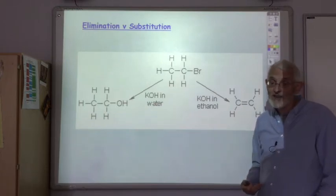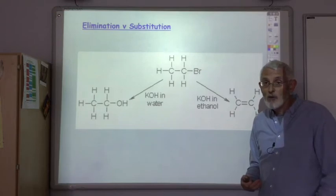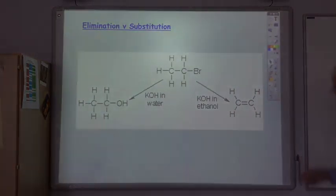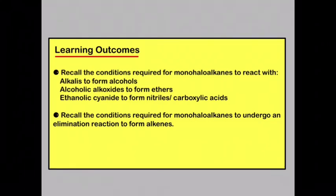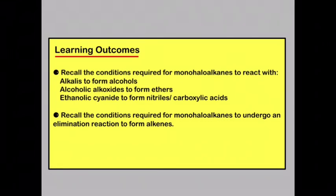So that's the reactions of the haloalkanes. By now you should be able to recall the conditions required for mono-haloalkanes to react with alkalis to form alcohols — potassium hydroxide dissolved in water; alcoholic alkoxides to form ethers — an alkoxide ion dissolved in ethanol; and ethanolic cyanide to form nitriles, which can then be hydrolysed to produce carboxylic acids. You should also be able to recall that an elimination reaction to form alkenes requires a strong base like potassium or sodium hydroxide dissolved in ethanol.